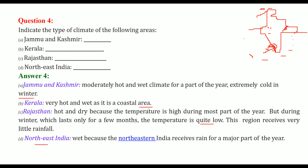Northeast India is very wet because it receives a lot of rain during the major part of the year. One place called Cherrapunji is known for nonstop rain throughout the year. Now things have changed, but once upon a time the rain never stopped there.